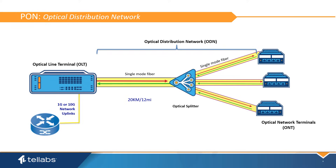The ODN can stretch up to 12 miles and consists completely of passive optical components. A single fiber from the OLT's PON interface is introduced to an optical splitter. The optical splitter is a simple fiber optic element that allows a signal from the OLT to pass through and be distributed to all ONTs connected to it. Splitters come in a variety of mounting options and configurations. Since they have no electronic components, they need no consideration for electrical or environmental needs.